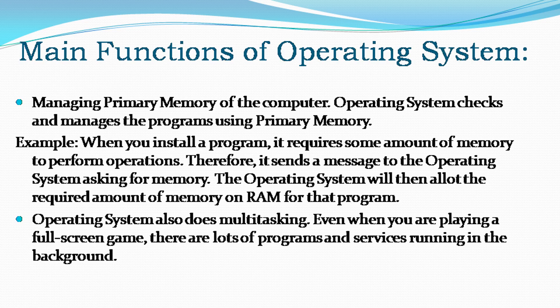Main functions of operating system: Managing primary memory of the computer. The operating system checks and manages the programs using primary memory. For example, when you install a program, it requires some amount of memory to perform operations. Therefore, it sends a message to the operating system asking for memory. The operating system will then allot the required amount of memory on RAM for that program.